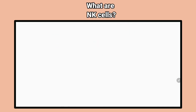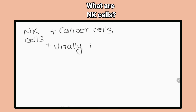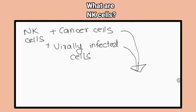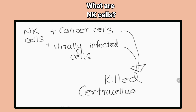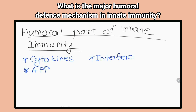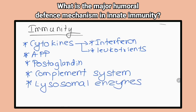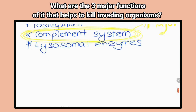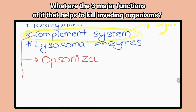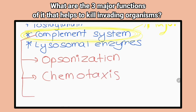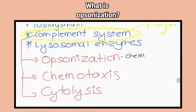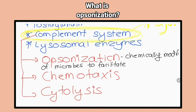What are natural killer cells and how do they act? They are derived from bone marrow and target virally infected cells and cancer cells. They perform an extracellular killing mechanism by adhering to the target cells and making pores in their cell membranes. What is the major humoral defense mechanism in innate immunity? The complement system. What are the three major functions that help kill invading organisms? Opsonization, chemotaxis and cytolysis. What is opsonization? Chemical modification of microbes to facilitate phagocytosis.